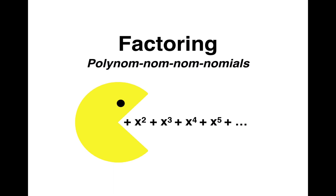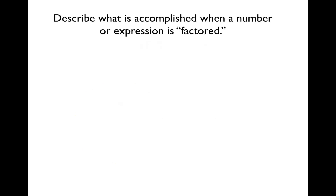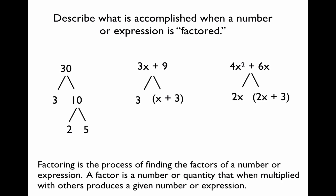This week we're going to continue our review of polynomials by reviewing how to factor polynomials. So very quickly, let's recall what factoring is. When we factor a value or an expression, we're breaking it up into values that when multiplied give us a product that is our original value. For example, 30 can be factored into 3 and 10, and 10 can be fully factored into 2 and 5. So the prime factorization of 30 would be 3, 2, and 5.